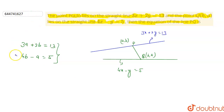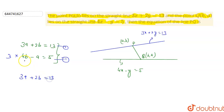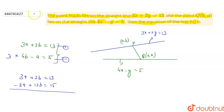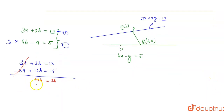Now solve these two equations. Multiply the second equation by 3. Equation one remains 3a + 2b = 13. The second becomes 3a - 12b = 15. Subtracting, 12 + 2 = 14b equals 15 + 13 = 28. So B = 28/14 = 2.